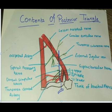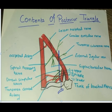In this diagram I have shown some contents of the posterior triangle. As you can see, anteriorly the posterior triangle is bounded by the sternocleidomastoid muscle, posteriorly by the trapezius muscle, and inferiorly the clavicle is present.